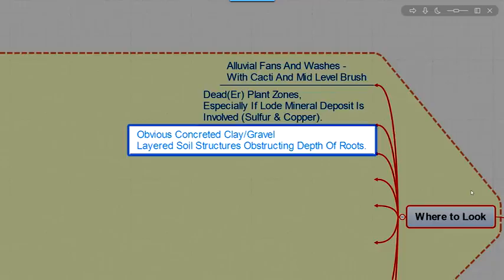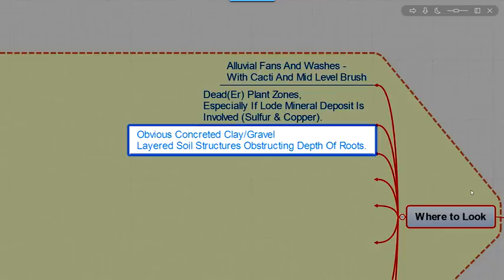The obvious concentrated or concreted clay and gravel layers. The structures. That's that caliche stuff. Layered soil structures obstructing the depth of the roots. Again, the plants get stunted off because they can't make it through that layer. It's too hard. And so they kind of grow in weird ways.